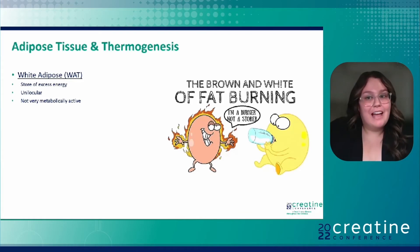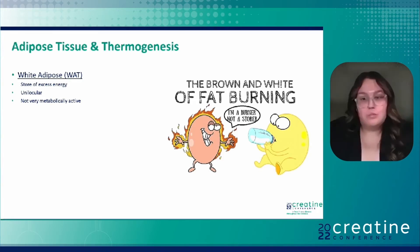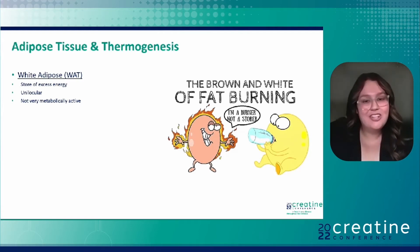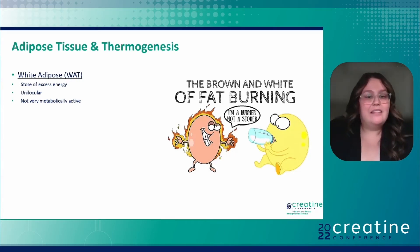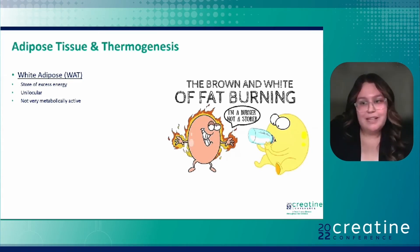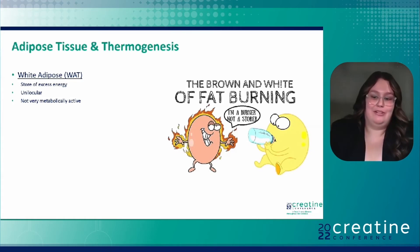Most of us, when we think about fat, we picture what is actually known as white adipose tissue. White adipose tissue, which you may hear me refer to as WAT through habit, is a store for excess energy. Therefore, it is not a very metabolically active tissue. Phenotypically, when we're talking about white adipose sites, they're unilocular, meaning that there's one large centralized lipid droplet in the center of the cell, which pushes organelles to the perimeter of the cell.